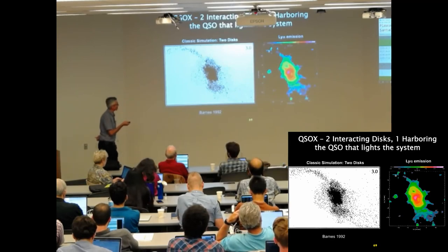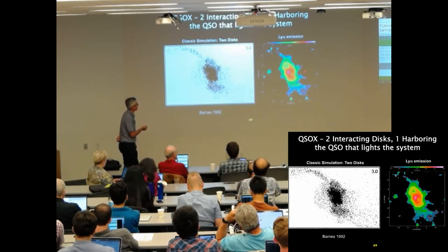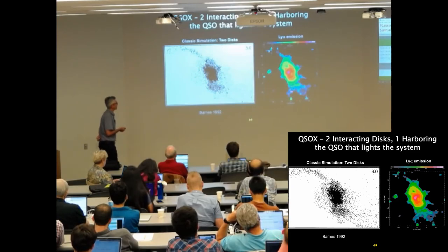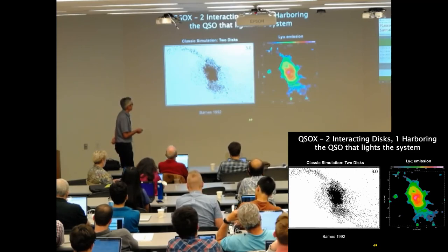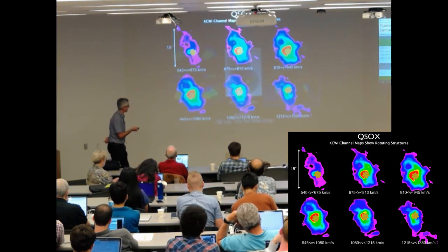This is a completely different kind of object. This is a quasar. The quasar is actually there. It's been subtracted. There's this giant thing around it. It actually looks like two interacting disks. Large gas disks. There are tidal features. This is a VELA simulation. This happened to look exactly like it. I don't know if that means anything.